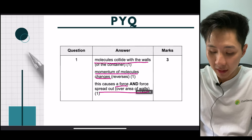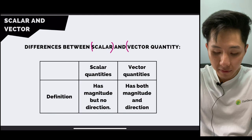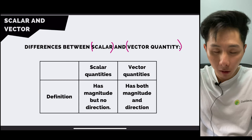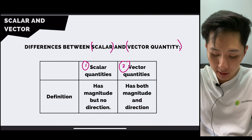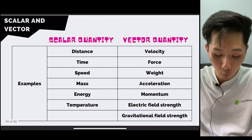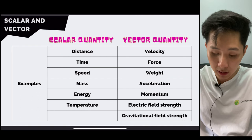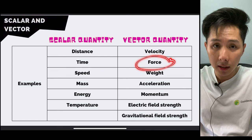Now the last subtopic: scalar and vector quantities. In physics, quantities can be categorised into two types. Scalar quantities have magnitude but no direction — examples include time, speed, mass, energy, and temperature. Vector quantities contain direction — for example, force can be to the left or right, upward or downward. Acceleration and momentum are also vectors.